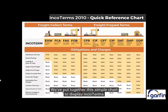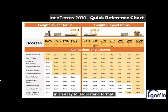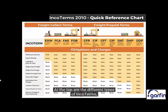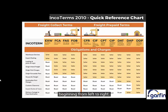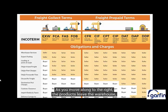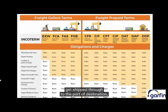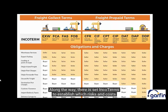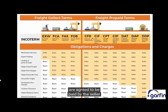We've put together this simple chart to display Incoterms in an easy-to-understand format. At the top are the different types of Incoterms, beginning from left to right. On the left side is the exporter or the seller of the goods, beginning at the seller's location or warehouse. As you move along to the right, the products leave the warehouse, get loaded on board a vessel at the port of loading, get shipped through to the port of destination, get customs cleared, and then delivered further through to the buyer's location. Along the way, there are set Incoterms to establish which risks and costs are agreed to be paid by the seller and which are to be transferred to the buyer.